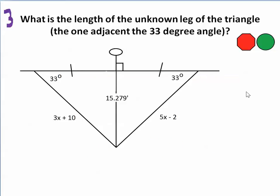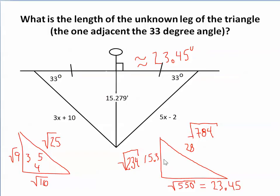Number 3 uses the same drawing and asks us to find the unknown length — the side adjacent to the 33-degree angle. We're really just dealing with a right triangle. The hypotenuse is 28 and one leg is 15.279 feet. Flipping the triangle to make it easier to see, we rewrite 15.3 squared as 234 under a square root, and 28 squared as the square root of 784.